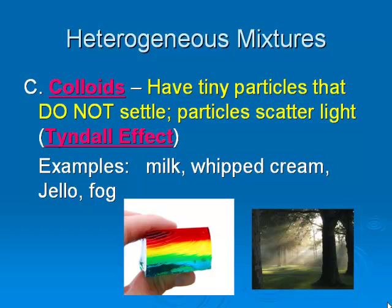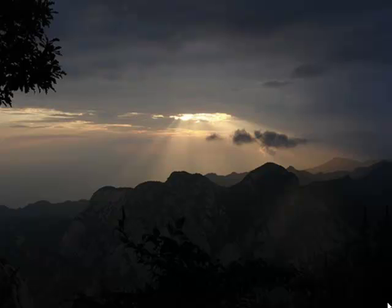The third category is colloids. The particles in a colloid are even tinier — very, very small, very difficult to see, and they do not settle. The particles will scatter light, and this scattering of light is called the Tyndall effect. You can see a picture of that in the lower right part of your screen. Things like milk, whipped cream, jello, and fog are all considered to be colloids. Here's another picture of fog — sunlight is traveling through the air and bouncing off the little particles of water, producing the Tyndall effect.